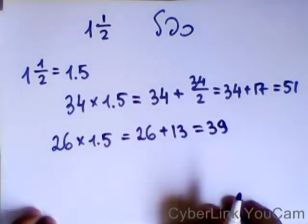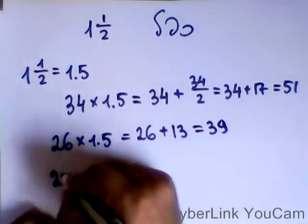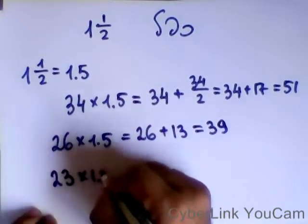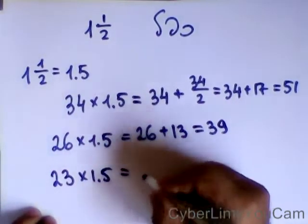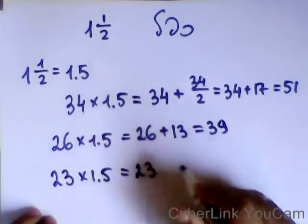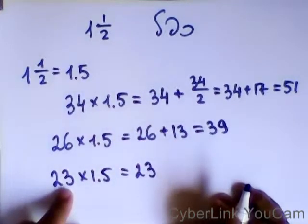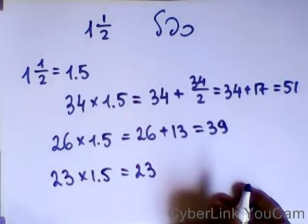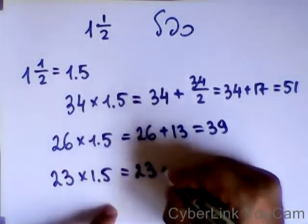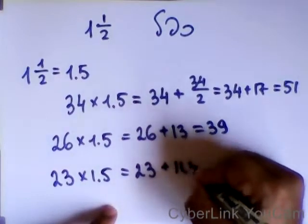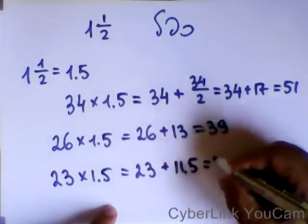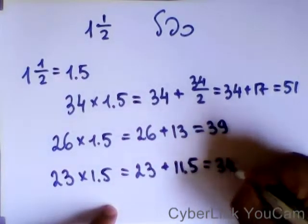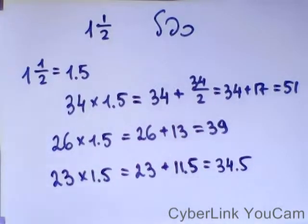עכשיו, נגיד 23 כפול אחת וחצי, אז אני לוקח 23, ומחבר עם חצי של 23, זה אחד אחת וחצי, פלוס אחת וחצי. התשובה יגיד, שלושים וארבע וחצי.